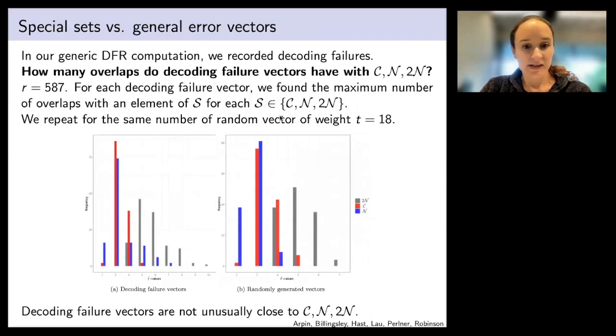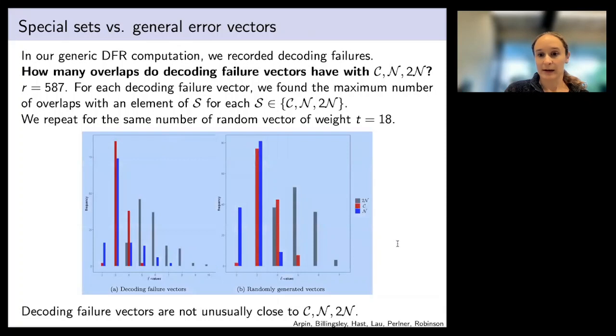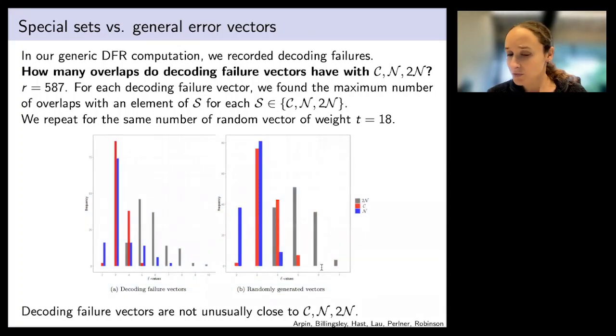After looking at this, we wanted to see how many overlaps do we have between vectors that are causing decoding failures and randomly generated vectors. How many overlaps do we have with these sets C, N, and 2N for say R equals 587? On the left we have a bar graph showing the max L value for the max number of overlaps with one of these sets 2N, C, or N. You can see that these number of overlaps range from 2 to 10 for randomly generated vectors of the same weight. It's actually around the same range, only from 2 to 7 here for the randomly generated vectors, so a few less overlaps with that set 2N, but still not a huge difference. This was interesting to us.